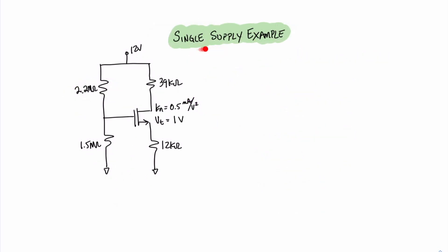Here we have a single supply example problem. In this case, we have a supply of 12 volts and a four-resistor biasing circuit, along with the parameters for the MOSFET. Much like most of our problems, we're going to consider that the gate current is zero. This means that we can fairly easily solve for the gate voltage by using a voltage division between the R1 and R2 resistors — the 2.2 megaohm and the 1.5 megaohm resistors. Writing this out, VG equals 1.5 megaohms divided by 1.5 megaohms plus 2.2 megaohms, times 12 volts. We find the result to be 4.865 volts for VG.